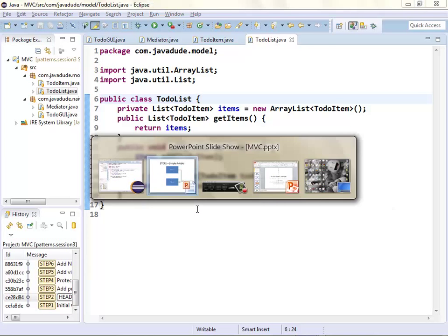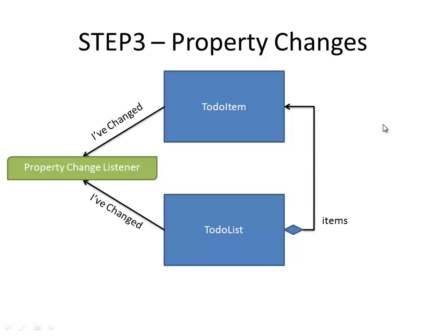Let's make this more interesting by setting these models up so outside people can know when things change. We're going to use the PropertyChangeListener class. Any time a ToDoItem changes — so his descriptive text changes — we're going to notify anybody who's registered. In the ToDoList, any time the list of items has changed, we're going to notify anybody who's interested as well. Note that 'list of items changed' is just at the top level — if an item is added or removed we notify, but not if the contents of one of those items changes.